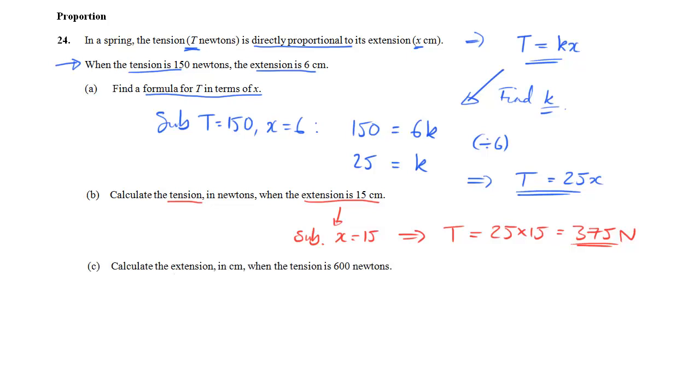Finally, the classic part c to this sort of question is going to be using the formula in reverse. We want to know x when we are given T, and the start of it is just the same. We substitute in the values that we know. So we put T equals 600 into the equation. It gives me 600 is equal to 25x, and we simply solve to find x. In this case, by dividing by 25. So x is 600 divided by 25, which is 24, and the units are centimeters.